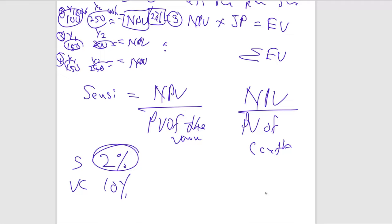Simulation is a technique that simulates numbers using computer software to generate multiple outcomes. All probabilities are plotted in a histogram to find the best possible scenario. A key advantage over sensitivity analysis is that simulation considers multiple variables changing at the same time, whereas sensitivity changes only one variable at a time.